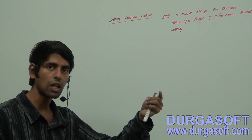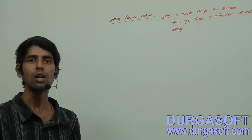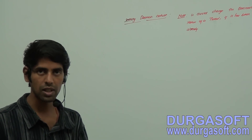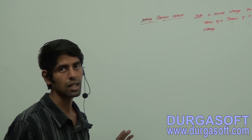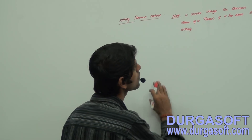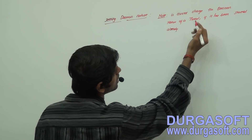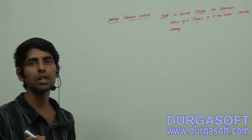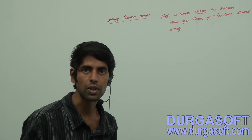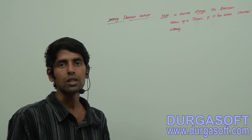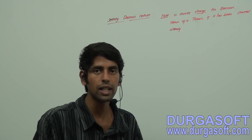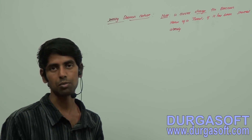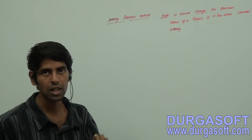If you understand and catch the flow, it will be very simple. No need to memorize anything — for each and every step I am giving an analysis so you can frame it in your own way. Now, if a thread has been started already and you go and change the daemon nature of that thread, what is going to happen?